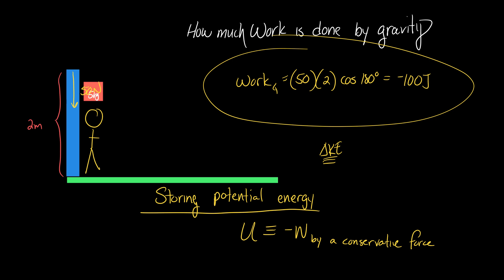So when I lifted the box, we did work against gravity. How much work? Negative 100 joules. We say the box now has 100 joules of gravitational potential energy because the amount of potential energy the box has is minus the negative 100 joules of work done by gravity.